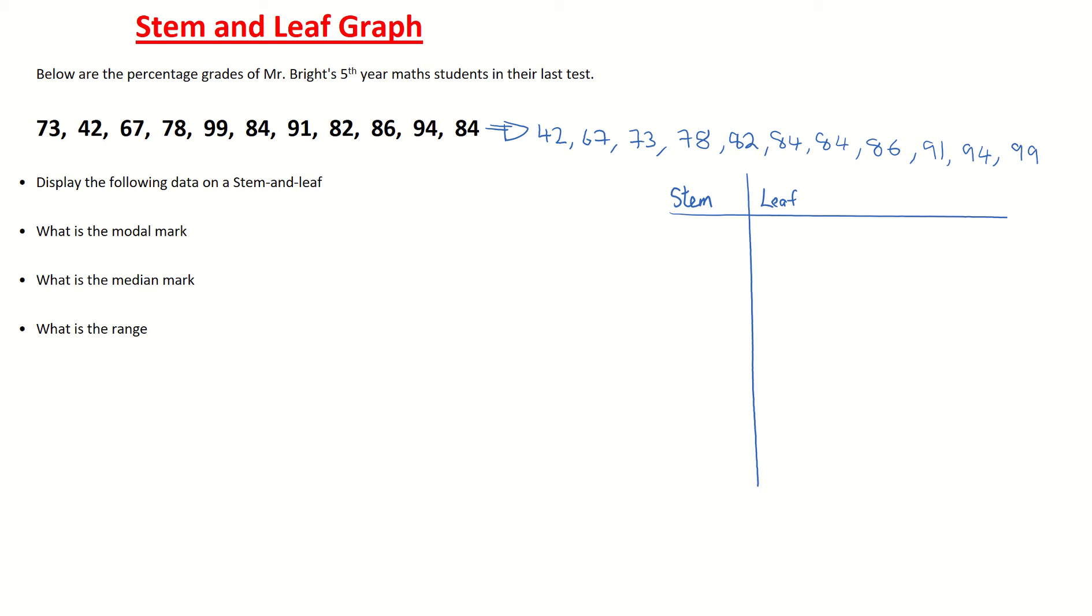First of all we take the smallest number 42. In the stem we're going to write the 4, and the 4 represents the units of 10. So the 4 there is standing for 40. And then I want to put the unit of 2 in the leaf. So I'm going to put the 2 here, and that's standing for 42. So I have 4 with the line and then 2. That's standing for 42%.